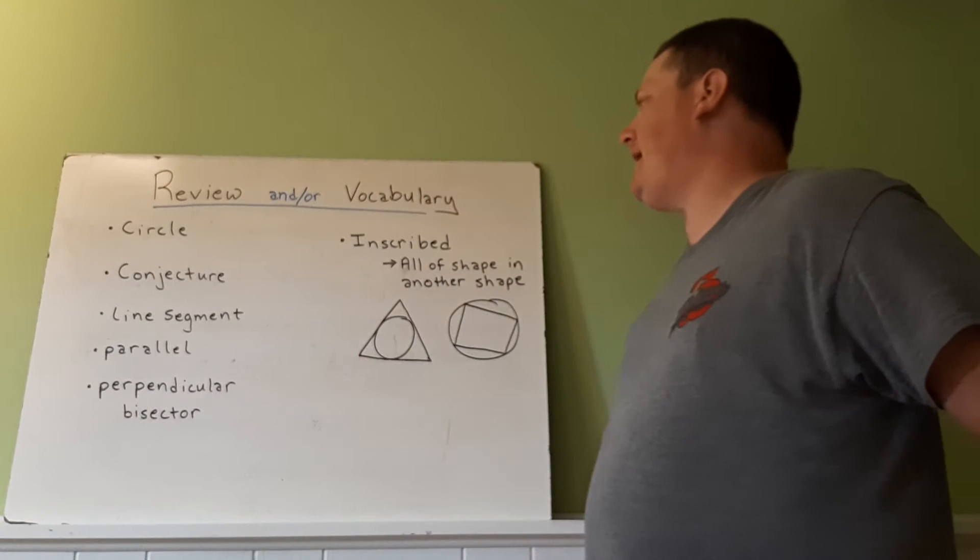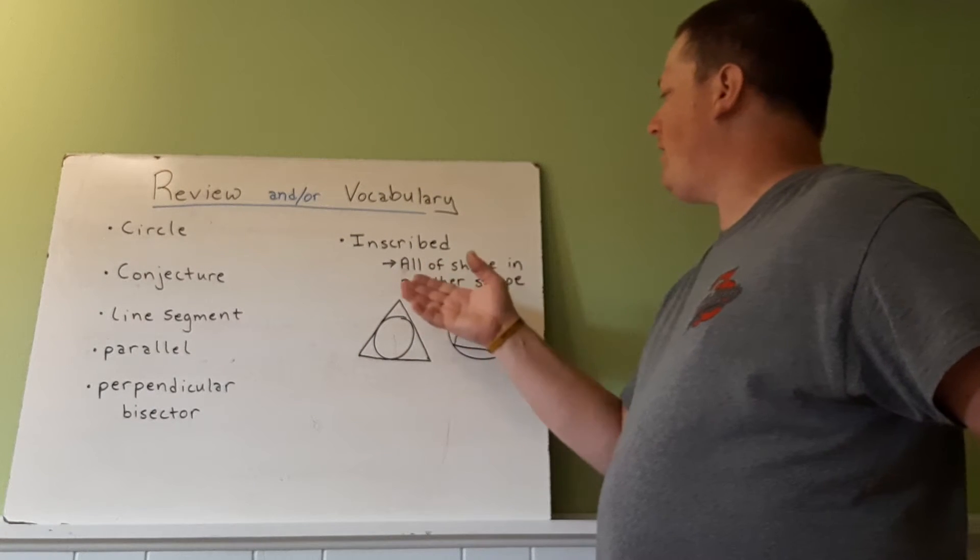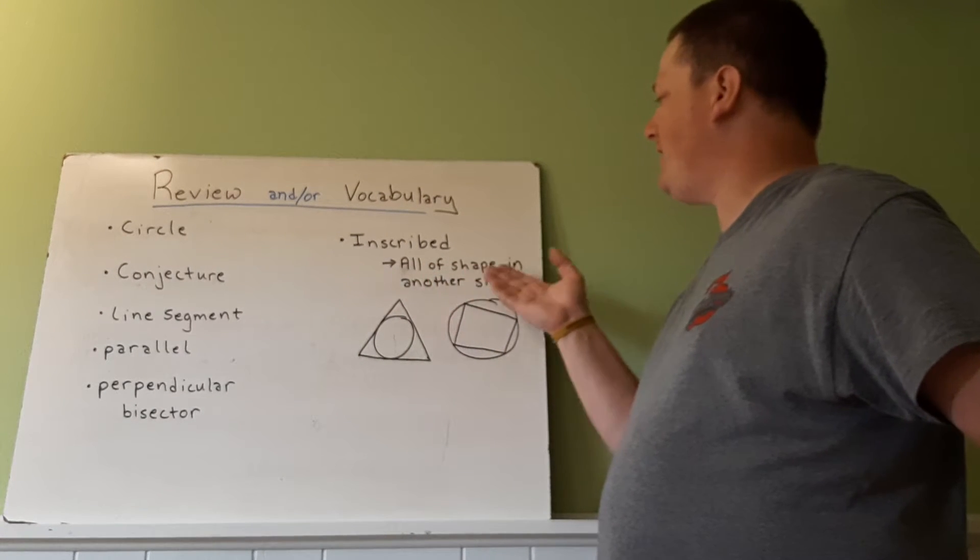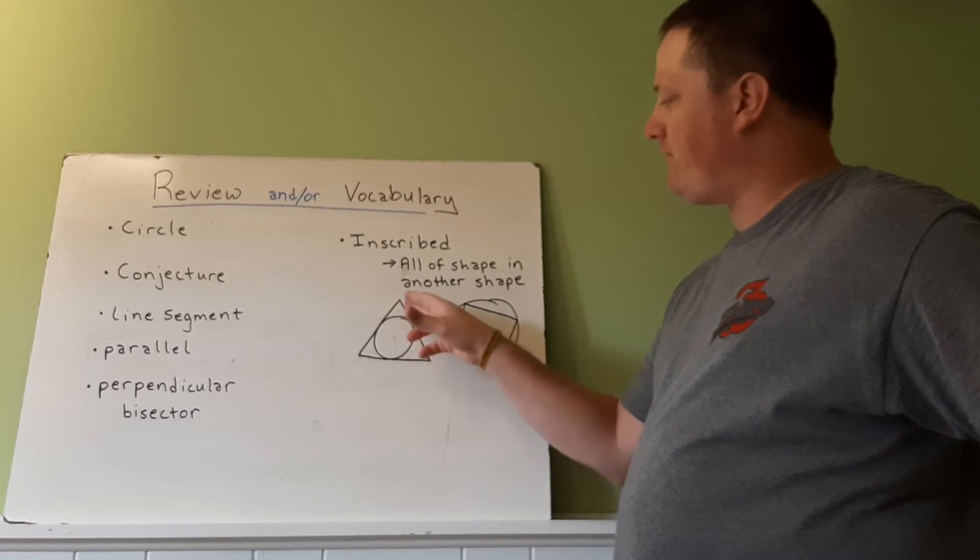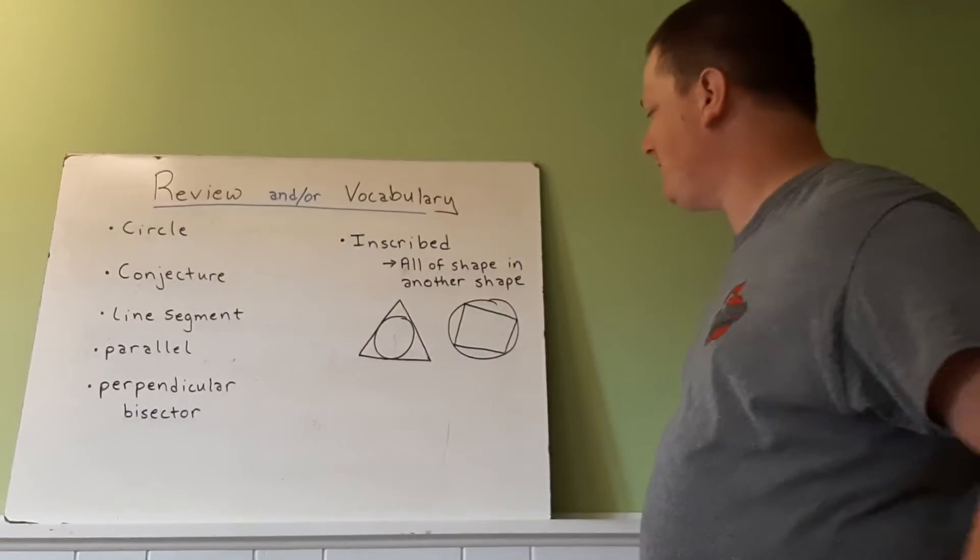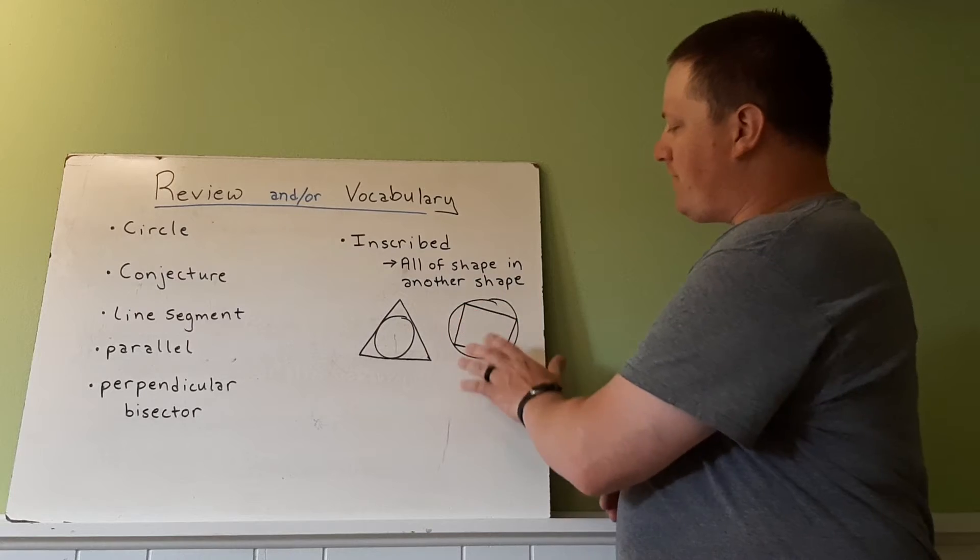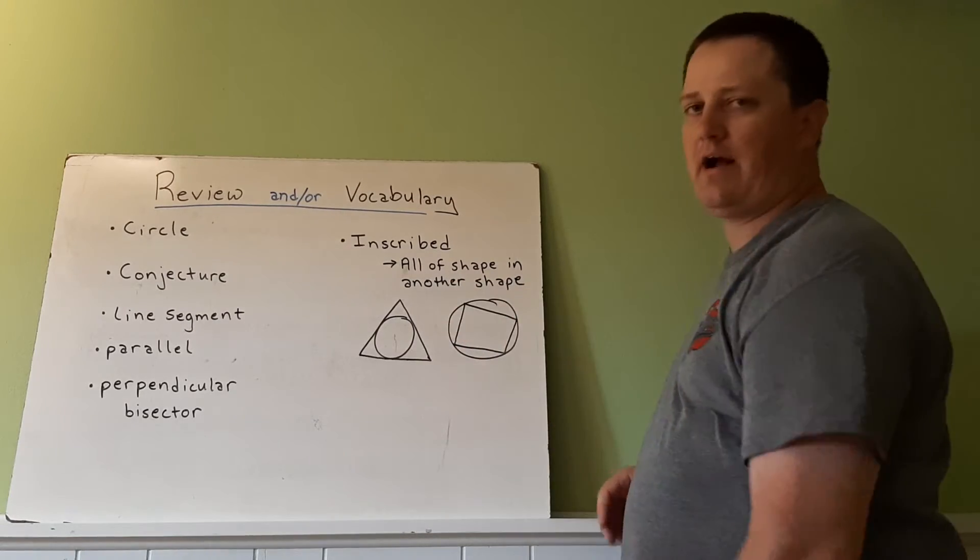A new word for us to look at is inscribed, where all of a shape is in another shape. Here we have a circle inscribed in a triangle, and here we have a quadrilateral with four sides inscribed in a circle.